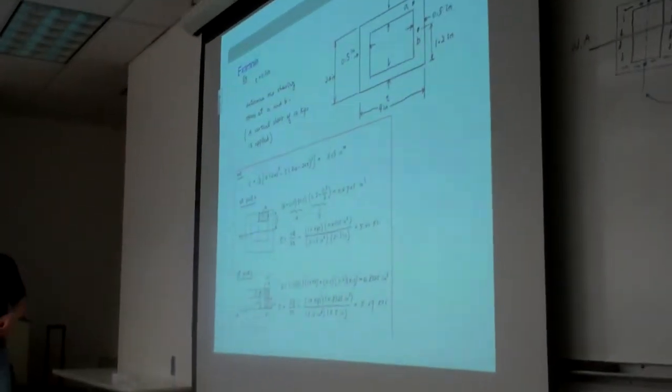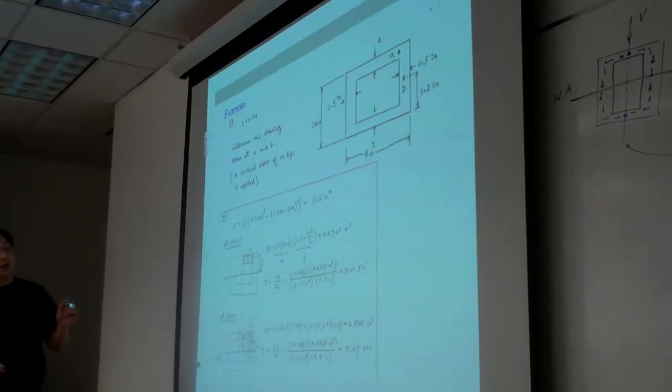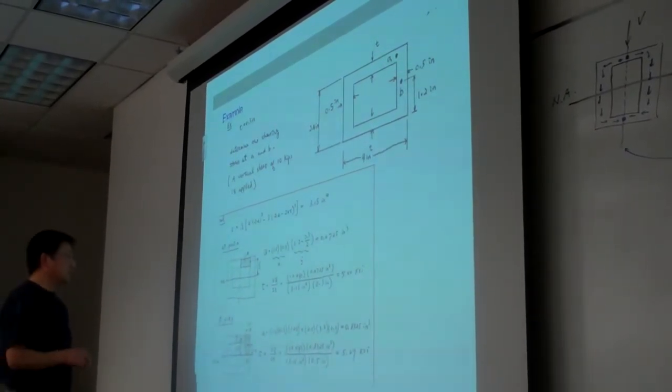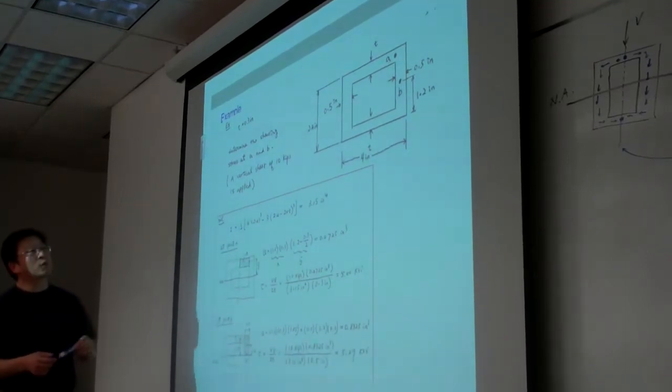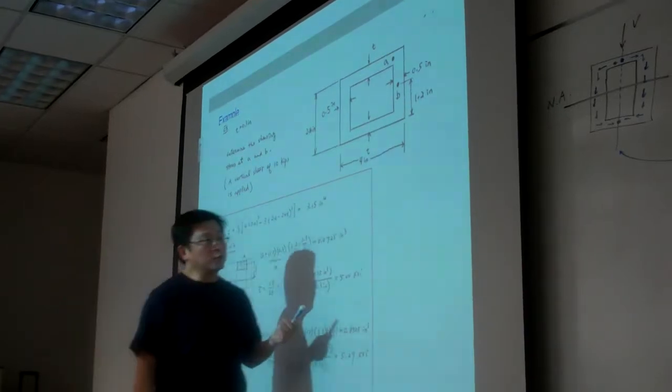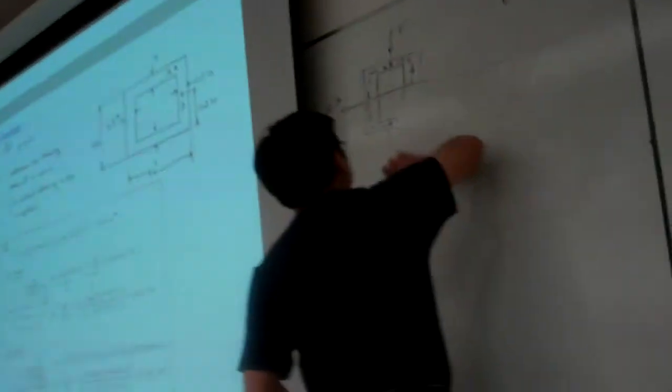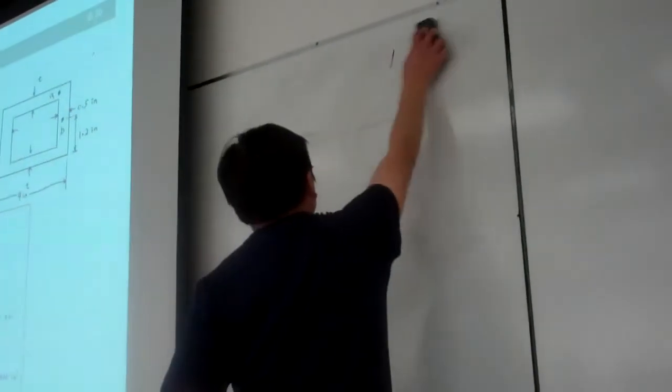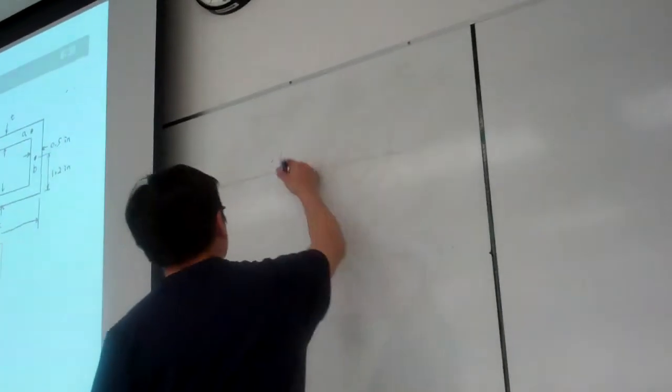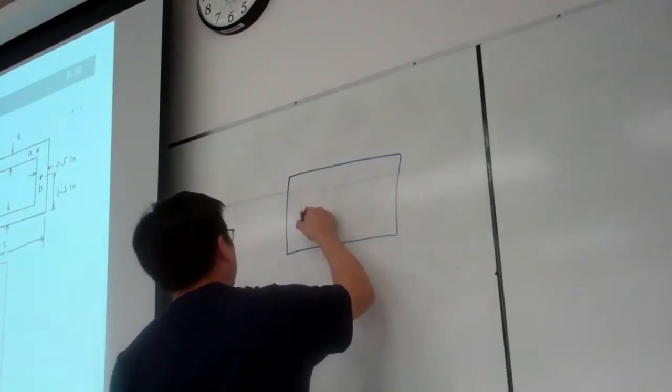So now for this example. This is the one similar to our homework. So for this case, how can we do this one? The strategy is this. For example, here, for this case, we want to calculate, for example, the average shear stress at point A. And this statement to me is a little bit ambiguous. So here, let me restate the problem here.